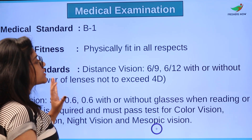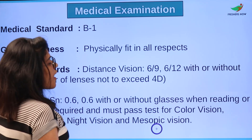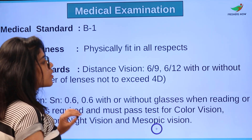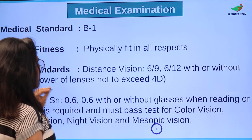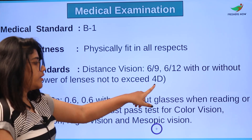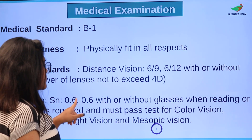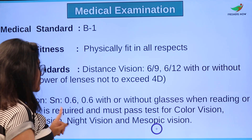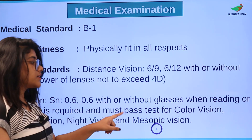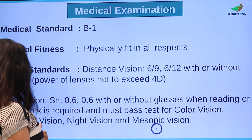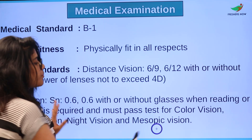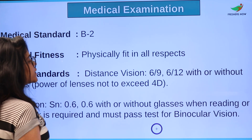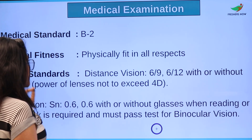For medical standard B1: general fitness — physically fit in all aspects. Vision: distance vision 6/9 and 6/12 with or without glasses; power of glasses should not exceed 4D. For near vision, SN 0.6 and 0.6 with or without glasses when reading or close work is required. Must pass color vision, binocular vision, night vision, and mesopic vision tests.